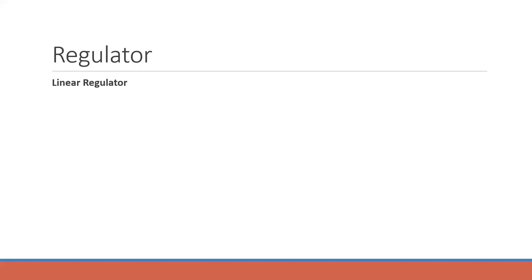The linear regulator is the most easily understandable type compared to others. It uses a transistor-like device to control how much current is transferred to the output, thereby regulating the output voltage level. The main advantage of linear regulators is that they are fast, effective, and easy to utilize, with noise-free circuits available within them. The main limitation is that in some applications, linear regulators tend to waste some power, dissipated in the form of heat.